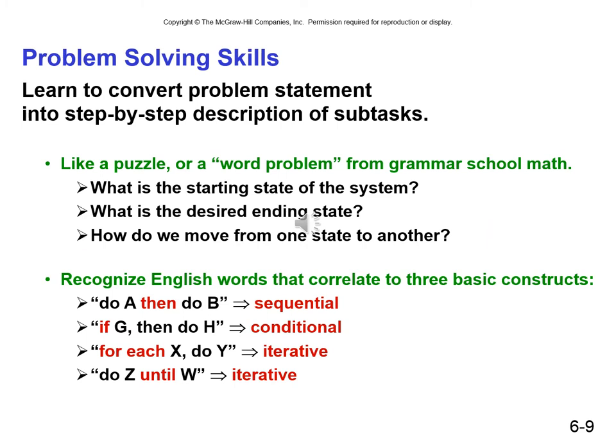During the stepwise refinement process, we will learn to convert problem statements into step-by-step descriptions of subtasks. Like a puzzle or word problem, we're dealing with questions like: what is the starting state of the system, what is the desired ending state, and how do we move from one state to the next? We develop an affinity for English words that correlate to one of the three basic constructs: 'do A, then do B' indicates sequential; 'if G, then do H' is conditional; and 'for each X, do Y' or 'do Z until W' are both indications of an iterative construct.